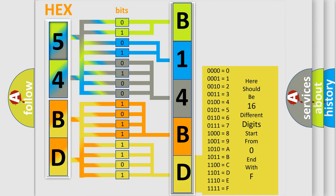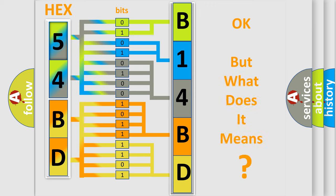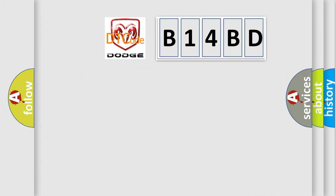We now know in what way the diagnostic tool translates the received information into a more comprehensible format. The number itself does not make sense to us if we cannot assign information about what it actually expresses. So, what does the diagnostic trouble code B14BD interpret specifically for Dodge car manufacturers?